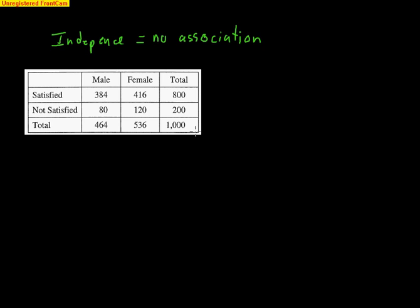So remember, it doesn't start with the individual categories. It always starts with your total. So the first thing you would do, and I made this one real easy so you don't have to spend a whole lot of time figuring out the percentages, but the first thing you'd do is, okay, let's start with what percentage of people were satisfied. So that's 800 out of 1,000. So that's clearly 80%, right? So 80% of people were satisfied. Now, if that was truly independent, I should see 80% of people, I'm sorry, I should see 80% of females being satisfied, and I should see 80% of the males being satisfied.